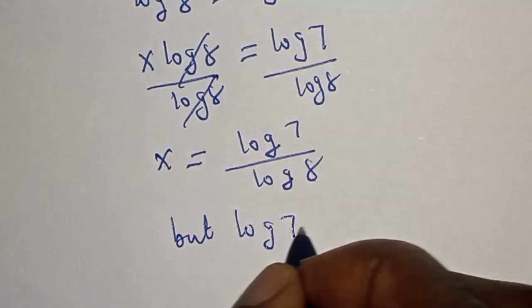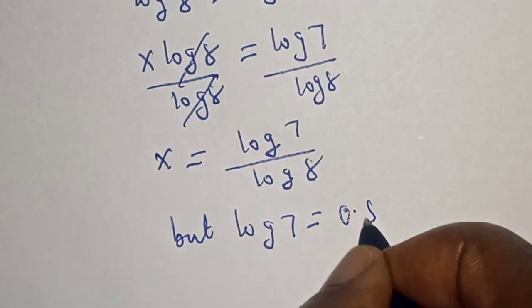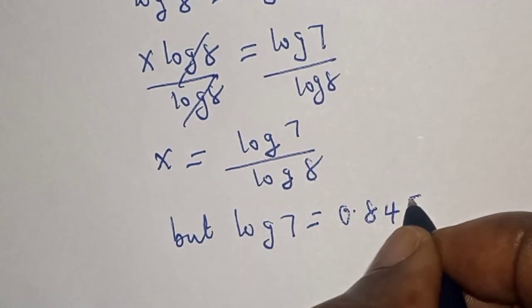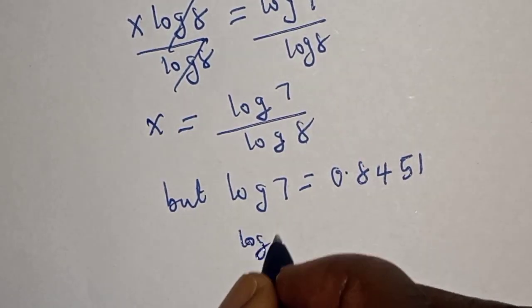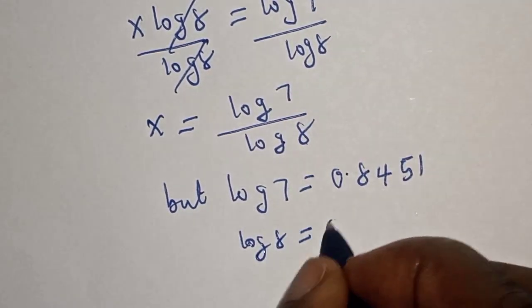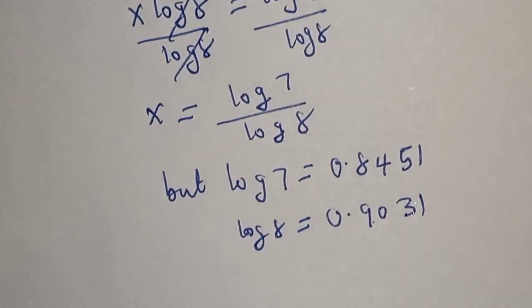But log 7 is equal to 0.8451 and log 8 is equal to 0.9031.